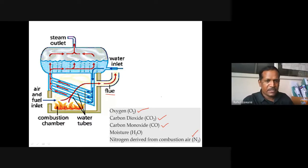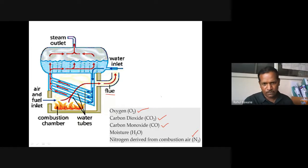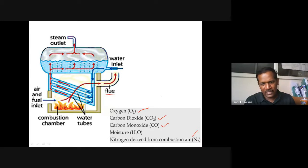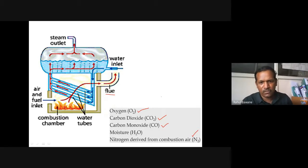The Orsat apparatus is used to analyze flue gas. It analyzes the content of CO₂, O₂, and CO in your exhaust gases. On the basis of those measurements, we can calculate how much is the content of N₂.